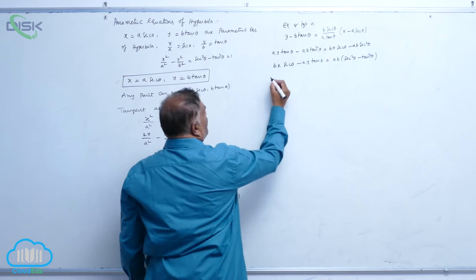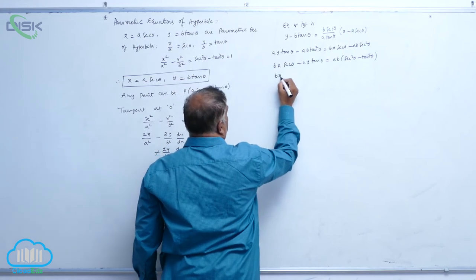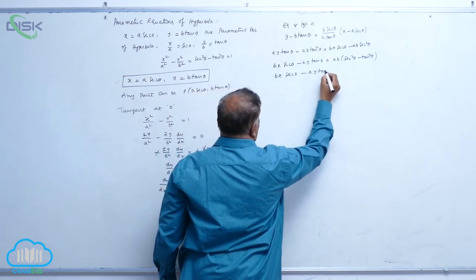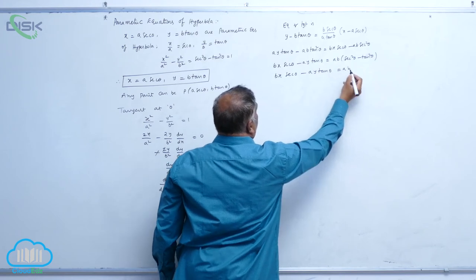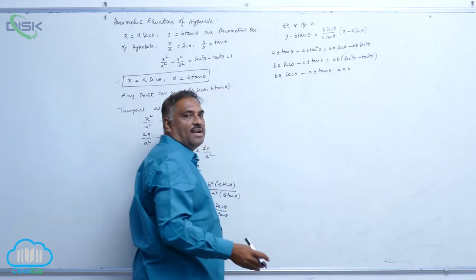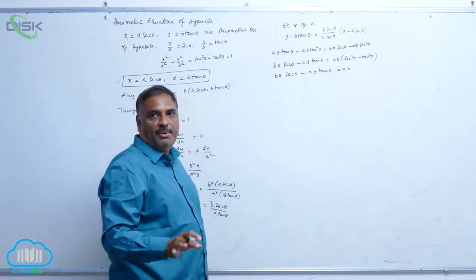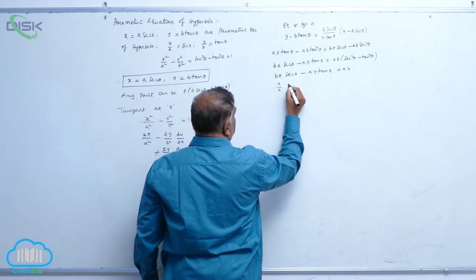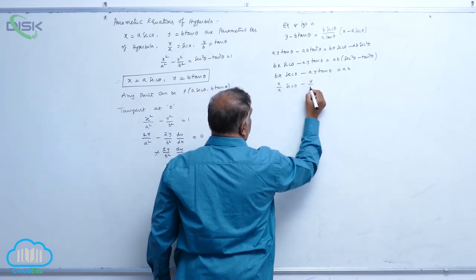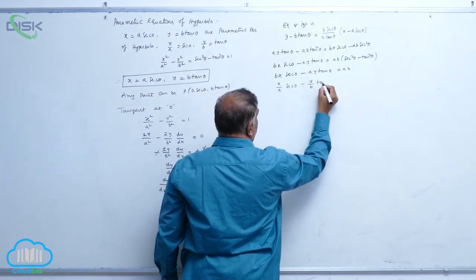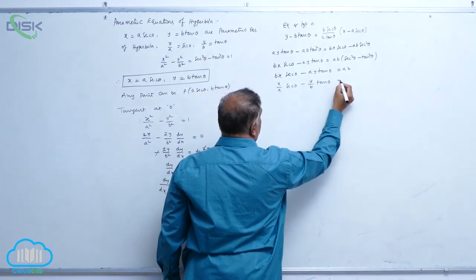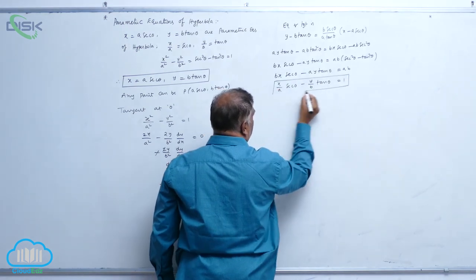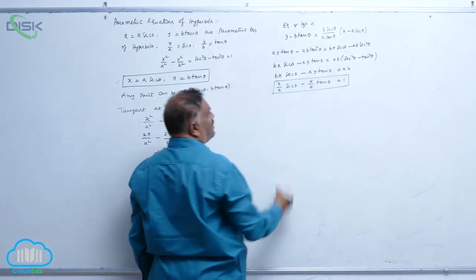So b x secant theta minus a y tan theta equals a b. Dividing throughout by a b gives x by a times secant theta minus y by b times tan theta equals 1. This is the equation of the tangent.